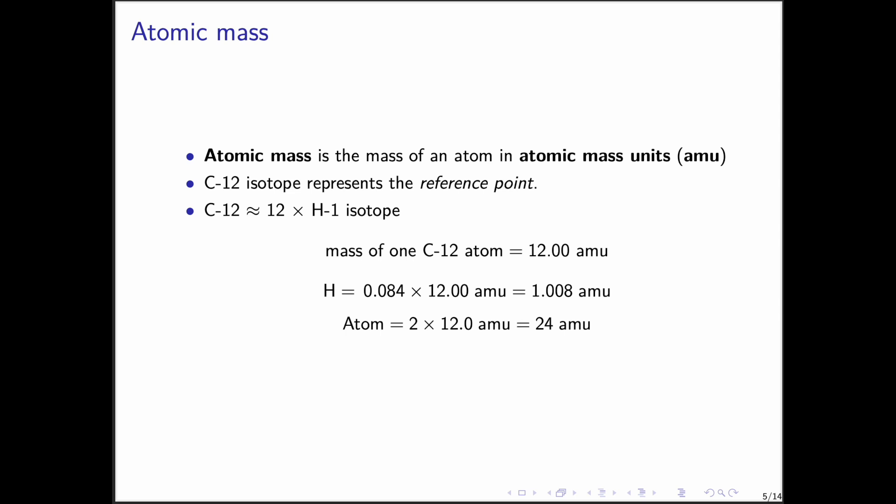So, every other atom's mass is determined relative to carbon-12. For instance, hydrogen is about 8.4 percent as massive as carbon-12, giving it a mass of about 1.008 atomic mass units. And if an atom is twice as heavy as carbon-12, then its mass would be 24 atomic mass units.